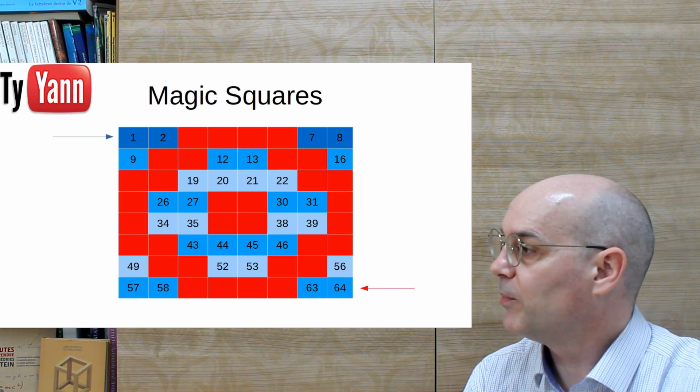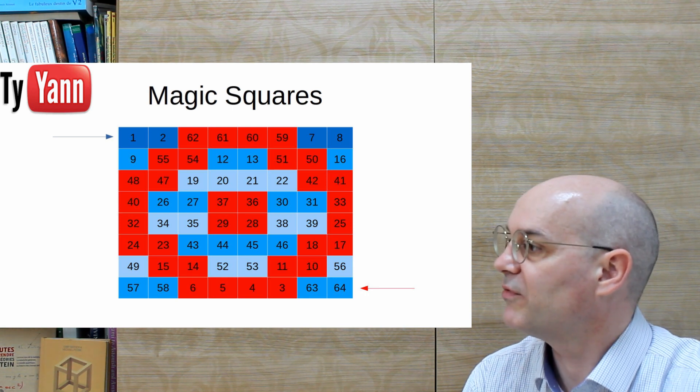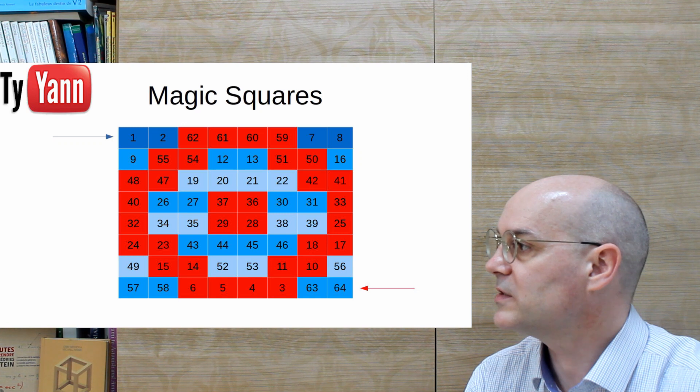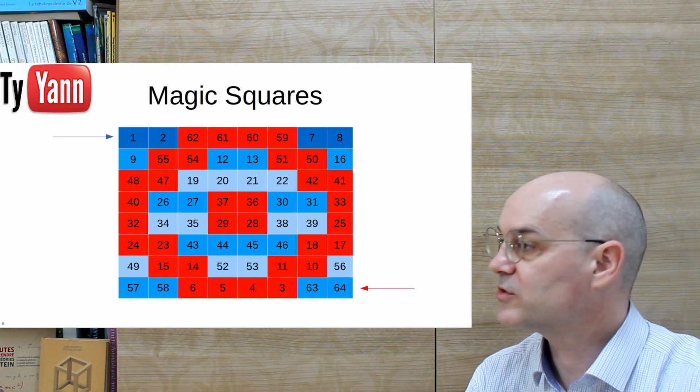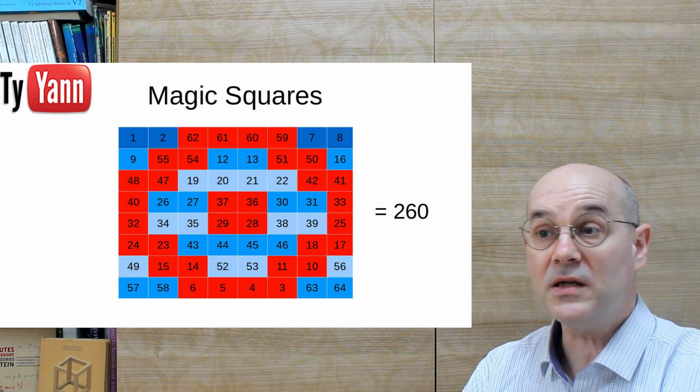And then from bottom right, we start count. One, two, no. And then four, three, four, five, six. Yes. And we keep going like this. And we have our magic square with eight by eight. And that's it. That's the technique we have.